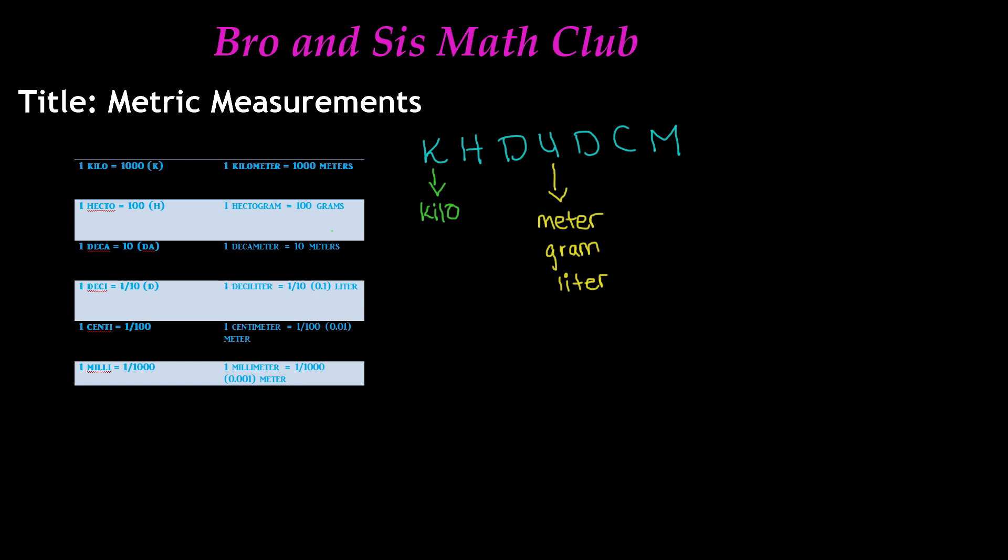Next we have H for hecto. Hecto stands for 100, and the symbol is H. One way to remember this: hecto and 100 both start with H. An example is one hectogram equals 100 grams.